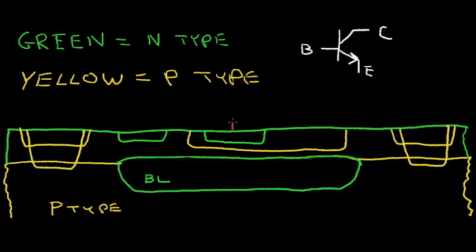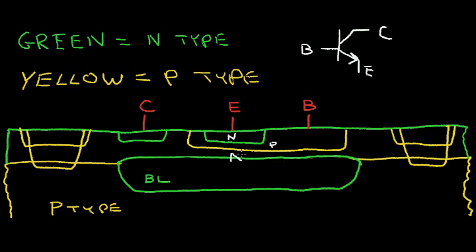This N-material here is going to form the emitter terminal of the NPN transistor. This base region will be connected to metallization, labeled B for base. This region will connect to metallization at the surface of the wafer as the collector region. So we have an N region, a P region, and another N region — giving us an N-P-N structure.